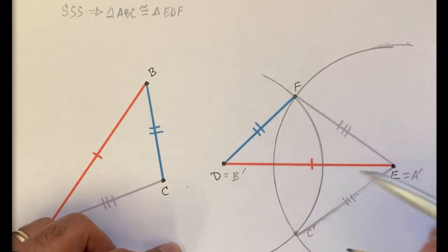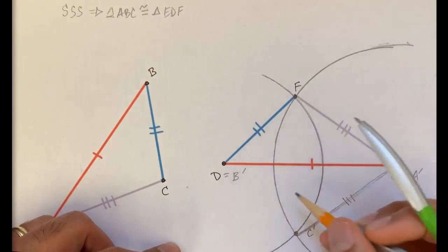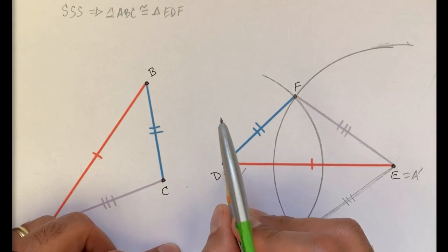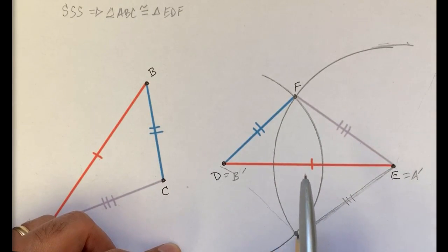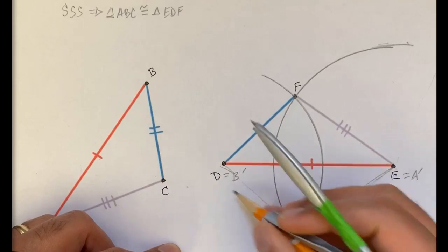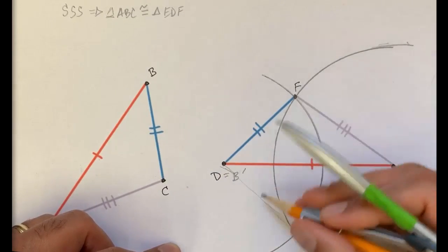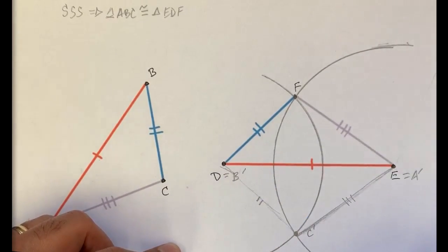And we know that point C prime in this case is the same distance from D as F is.